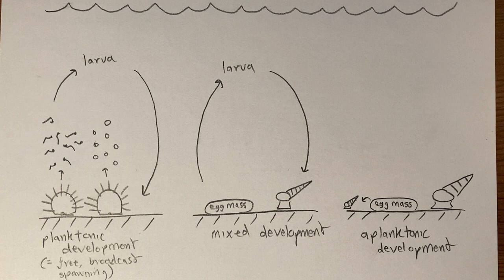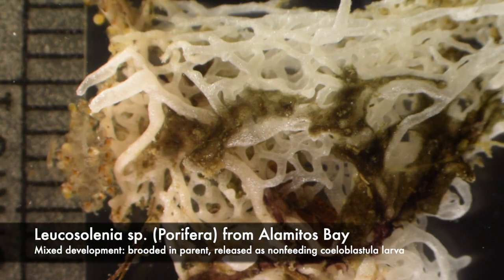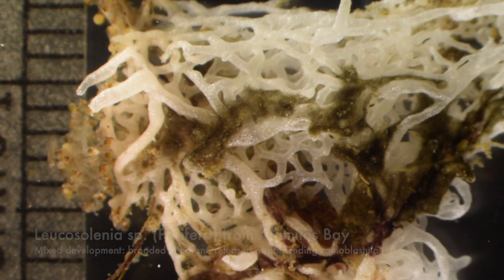First let's look at some larvae I obtained directly from their parents. Since I can usually identify adults, I know the identity of these larvae. Here's an adult calcareous sponge, Leucoselenia. It broods its larvae in the sponge's osculum and you can see that eventually they swim out of the parent. They're non-feeding and they probably have a very short planktonic period of a few hours or days.